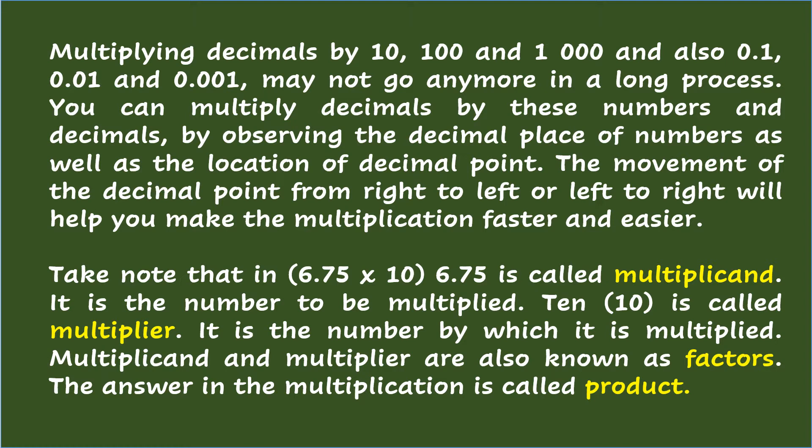Take note that in 6 and 75 hundredths times 10, 6 and 75 hundredths is called the multiplicand — it is the number to be multiplied. 10 is called the multiplier — it is the number by which it is multiplied. Multiplicand and multiplier are also known as factors. The answer in the multiplication is called the product.